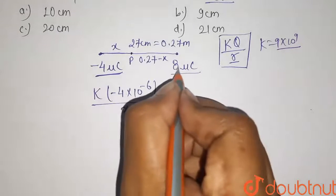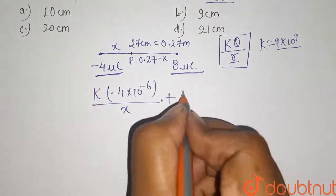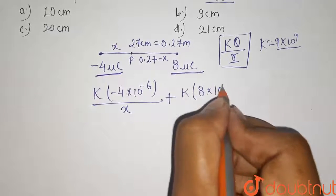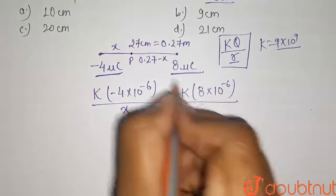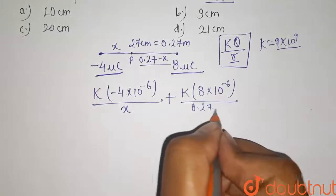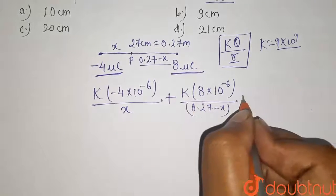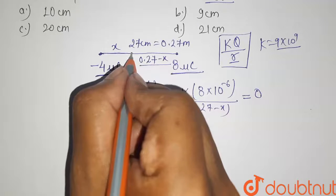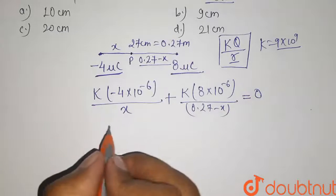Plus the potential due to 8 micro coulomb, that is k into 8 into 10 to the power minus 6 coulomb divided by the distance here is 0.27 minus x. It will be equals to 0, because the potential at P is equals to 0.